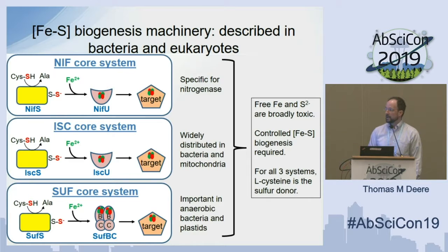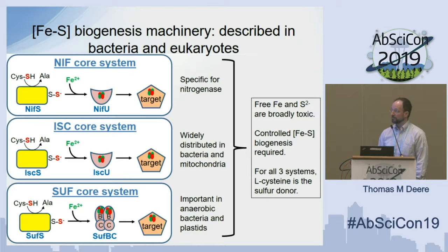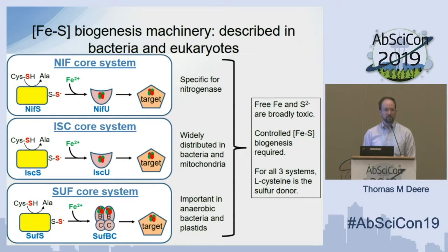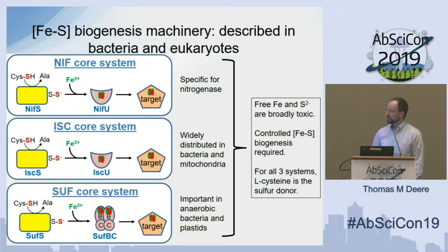Common to all three systems is the overall reaction scheme: a cysteine desulfurase takes sulfur from cysteine, then helps assemble it with iron — the iron source varies by organism and system — onto a scaffold protein. For nif and isc, the cysteine desulfurases are the S proteins, the U proteins are the scaffolds, and from the scaffold a cluster can be handed off to a target apoprotein. The suf system works the same way in bacteria, but the scaffold is a multimer of SufB, SufC, or SufD proteins. All share the fact that free iron and sulfide are broadly toxic, so controlled biogenesis is required, and for all three systems cysteine is the sulfur donor.